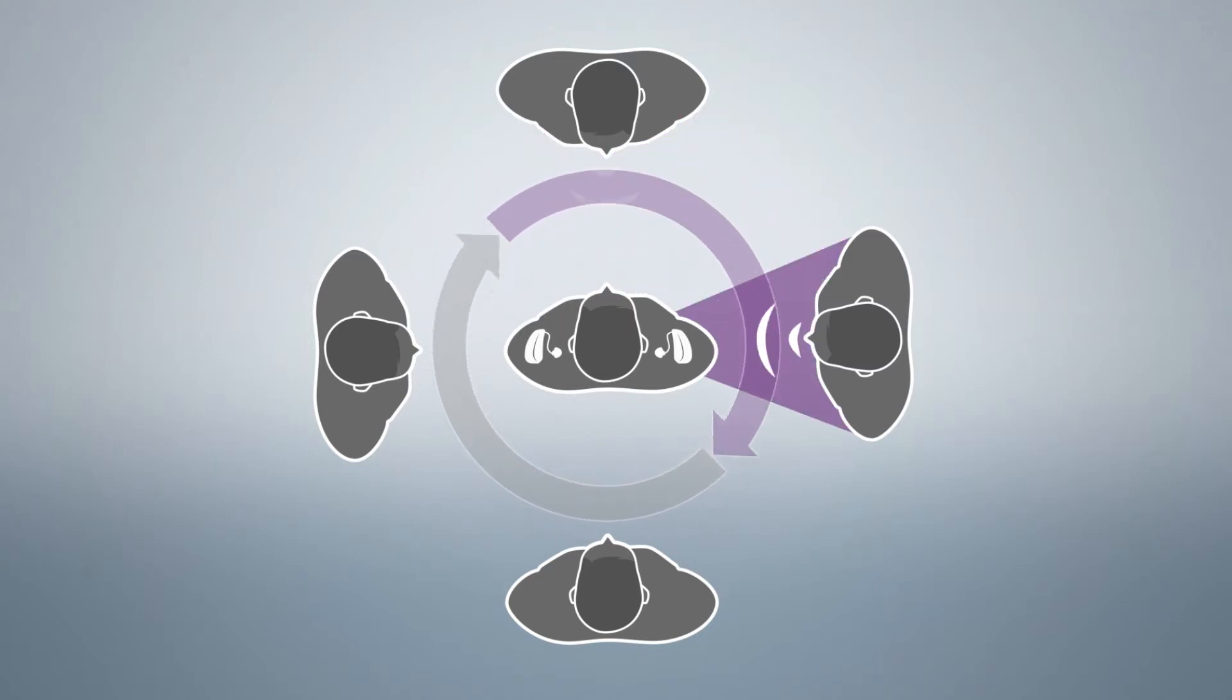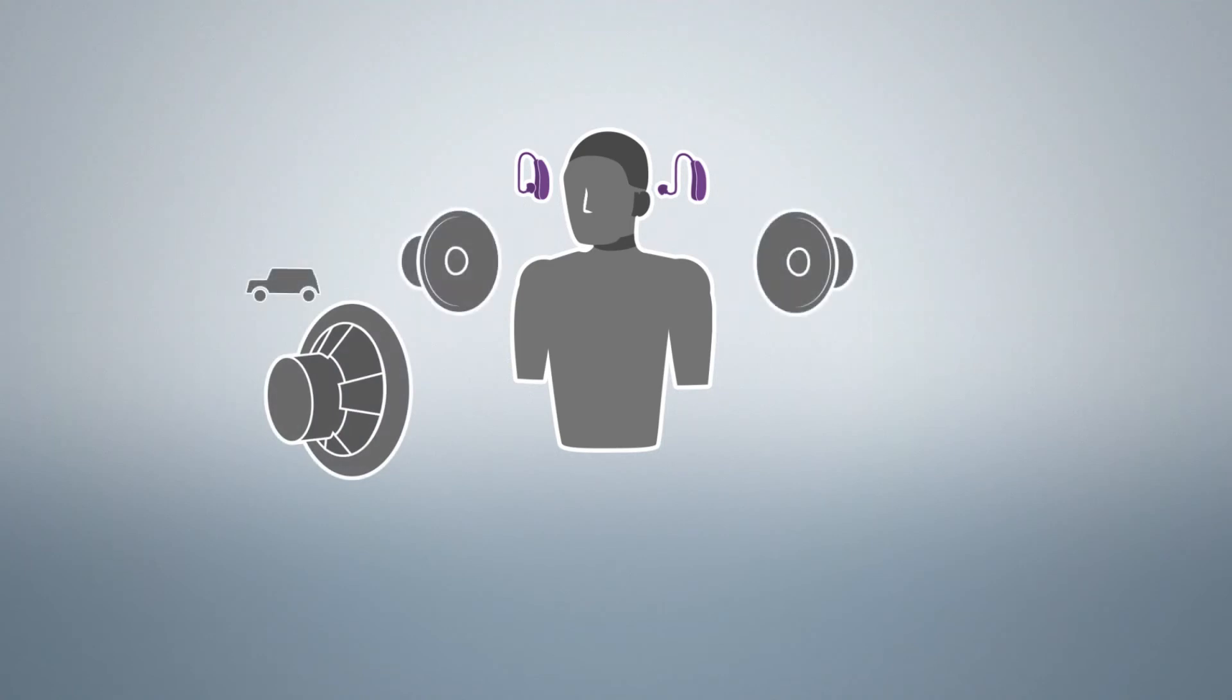To make this benefit audible for you, let's listen to a short demonstration. A Kemar mannequin represents the hearing instrument wearer. It is wearing two wireless Karat Binax hearing instruments. Three speakers surround the mannequin. The one in the front plays car noise. The other two loudspeakers play speech.